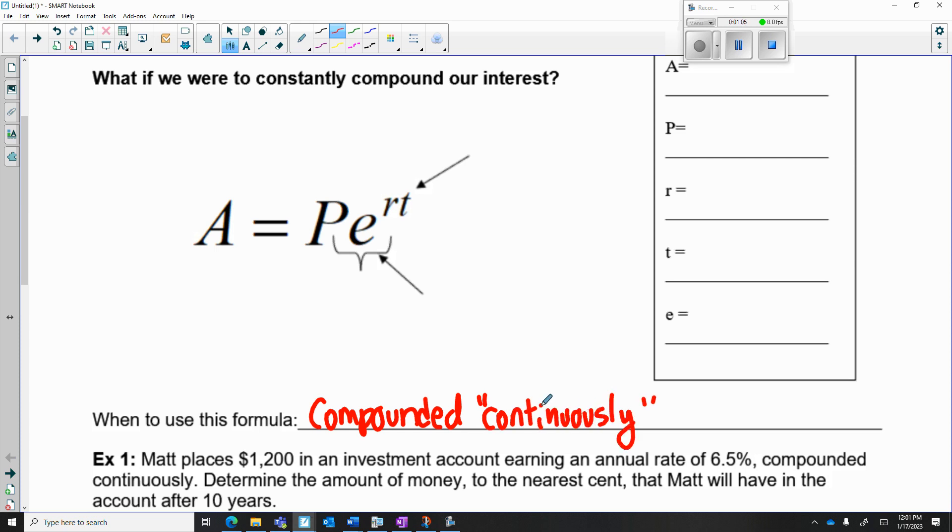This indicates that we're actually going to use a different formula than the one we used the other day. The other day we used the formula A = P(1 + r/n)^(nt), which is the compound interest formula for every other type of compounding, but now we're going to use this separate formula which is called PERT.